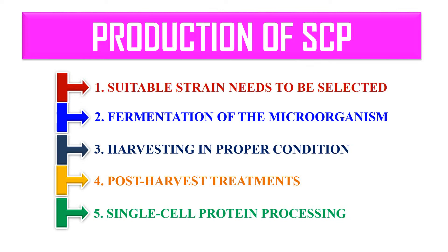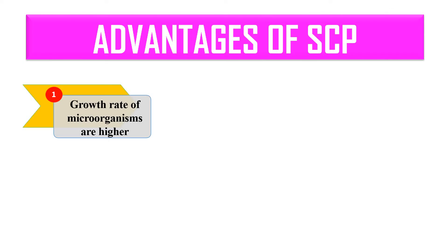The chosen microorganism is introduced into the culture medium under favorable conditions, and after culturing, the biomass can be processed for use. Regarding the advantages of single cell proteins: first, the growth rate of microorganisms is usually very high — some microorganisms can even double within 30 minutes. So as the growth rate is high, we can get plenty of protein from them.